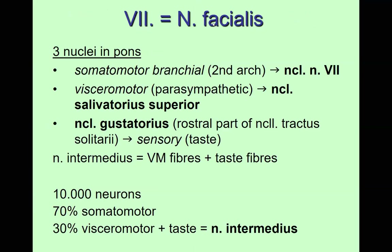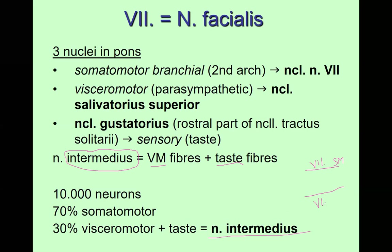The visceromotor and taste fibers together we call the intermediate nerve. The intermediate nerve appears between the facial nerve's somatomotor part and the vestibulocochlear nerve. The nerve appears alone and then merges with the facial nerve. Sometimes it is called the intermediate nerve, but altogether we call it the facial nerve.